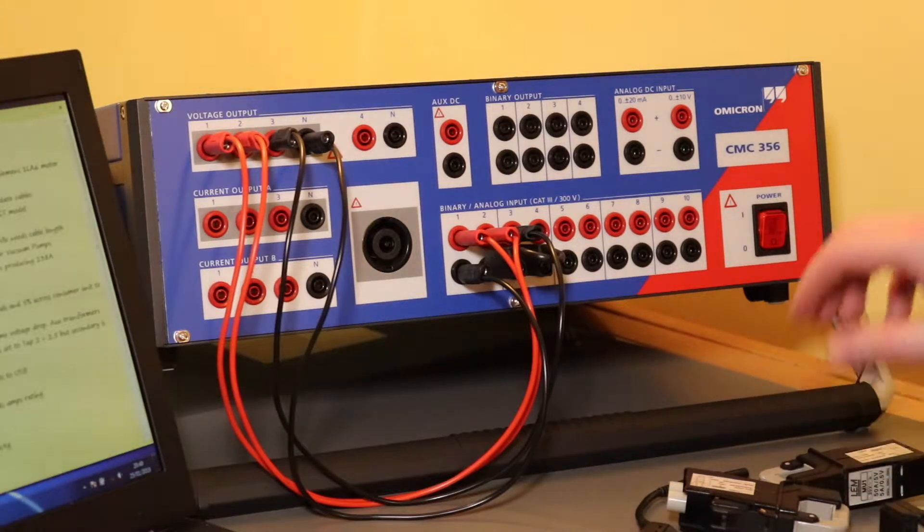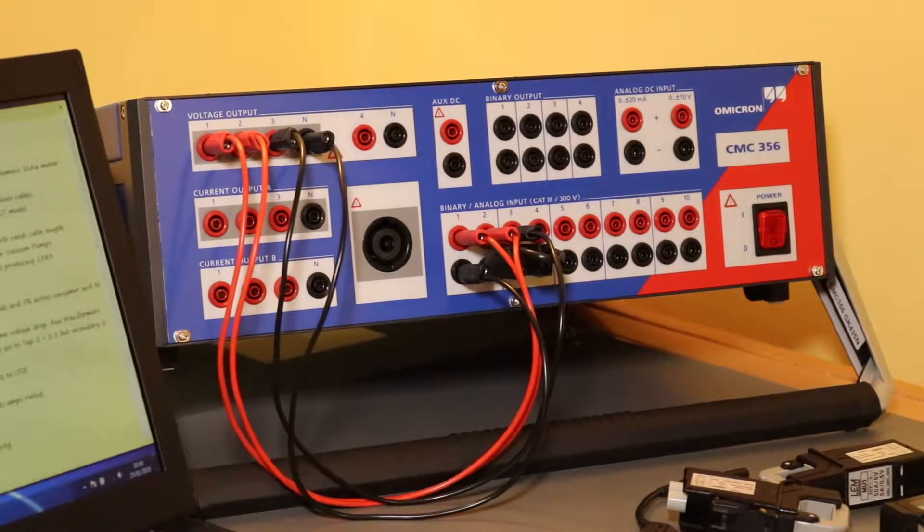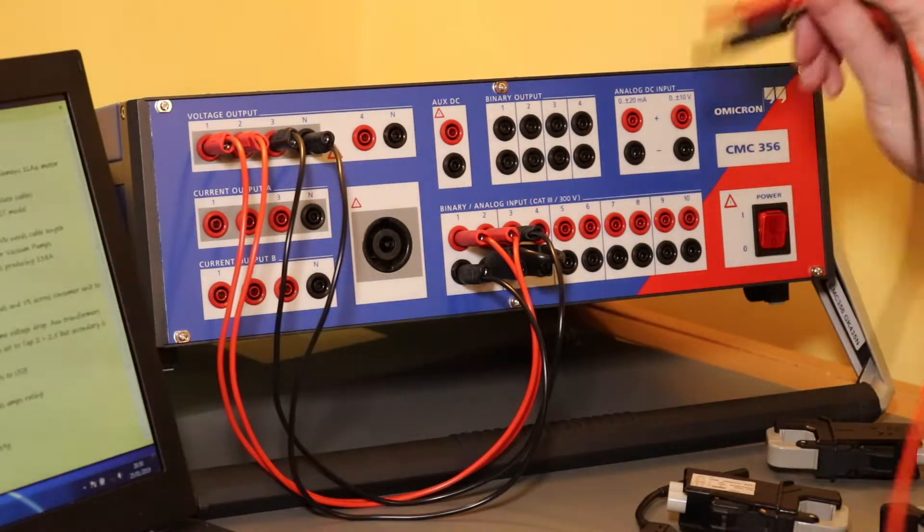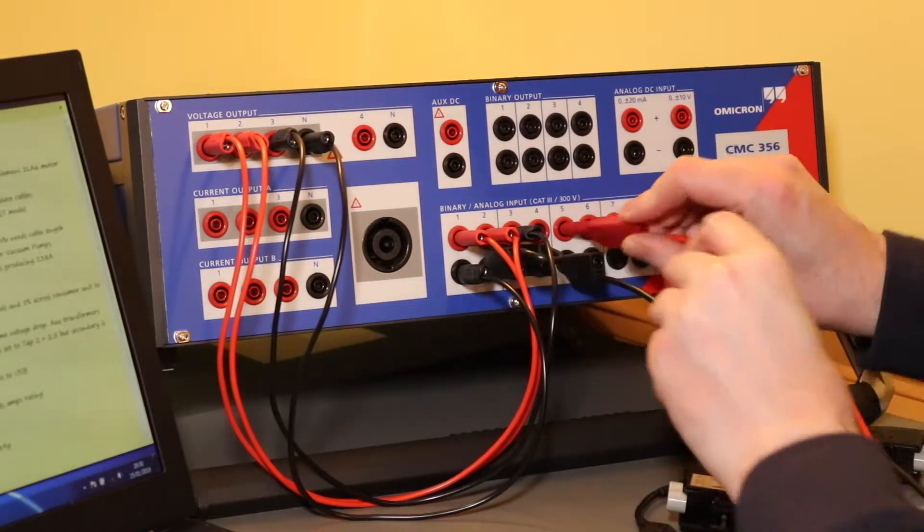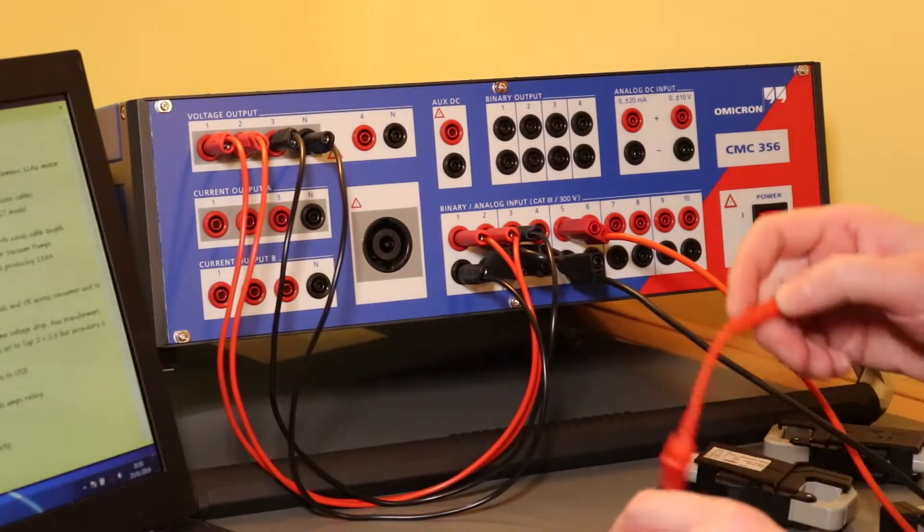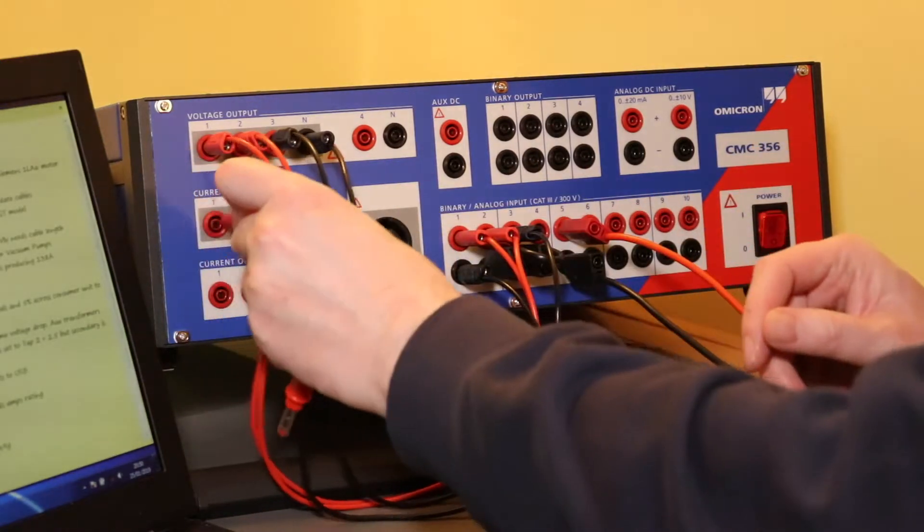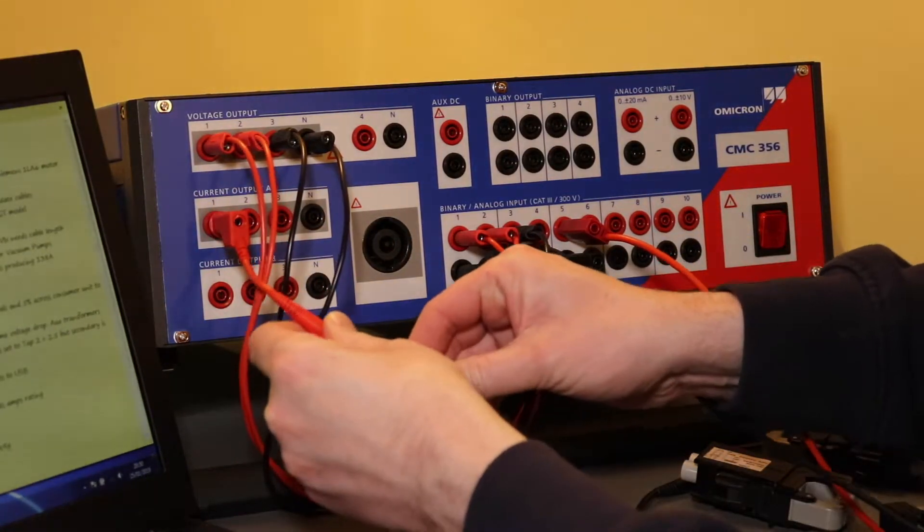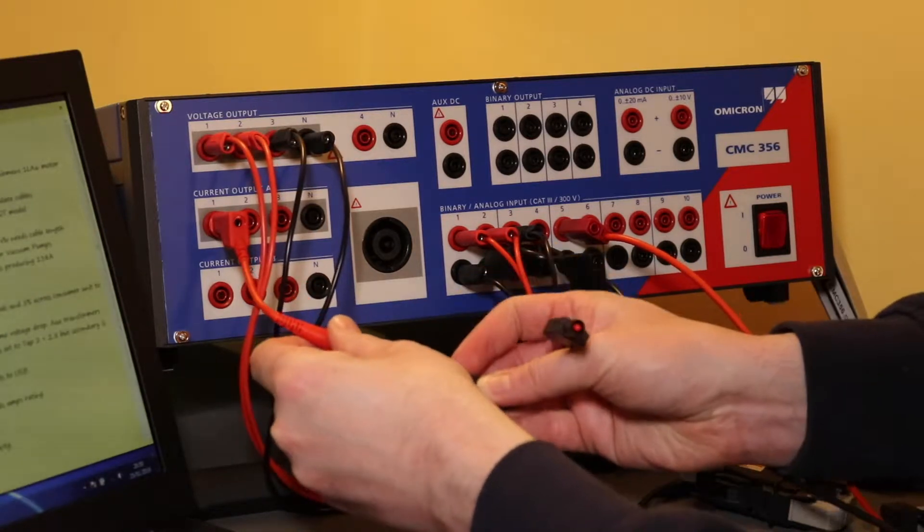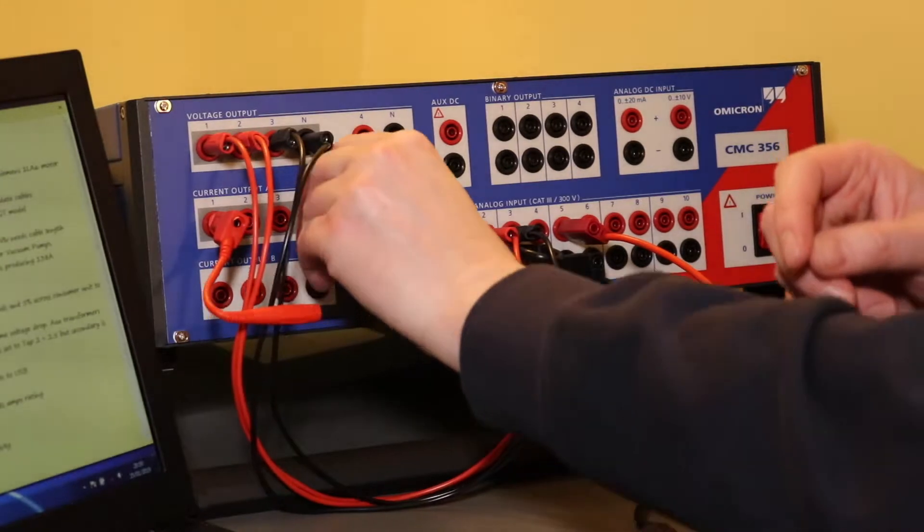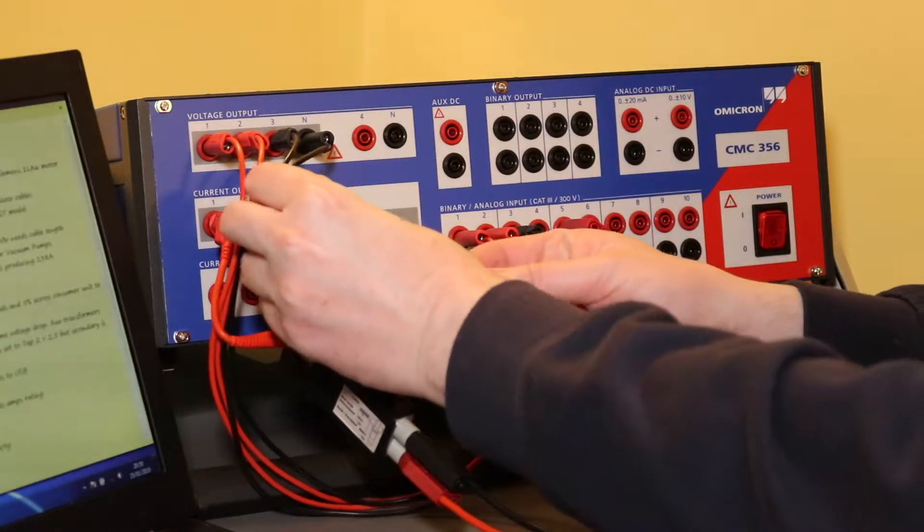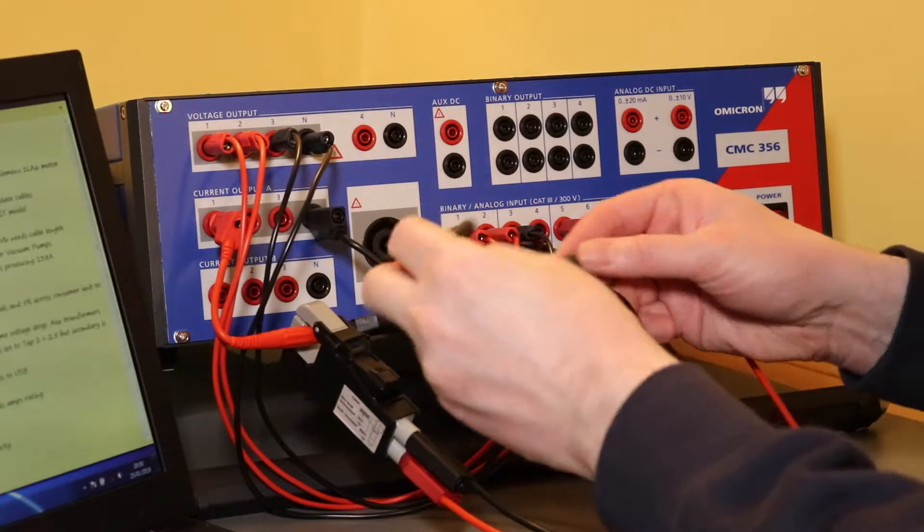I will just wire CTs direct to five, six, and seven. So that will be the first CT, and all I'm going to do is link the current from first channel to the neutral, and then I can put a clamp around that one and then link the second one.